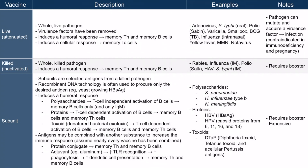Now let's move on to a more effective antigen: proteins. Proteins cause T cell dependent activation of B cells, meaning memory B cells are formed and memory T helper cells are formed. Since activated helper T cells are present, class switching can occur and all classes of antibodies can be produced. Protein antigens induce a more advantageous immune response than purely polysaccharide vaccines.